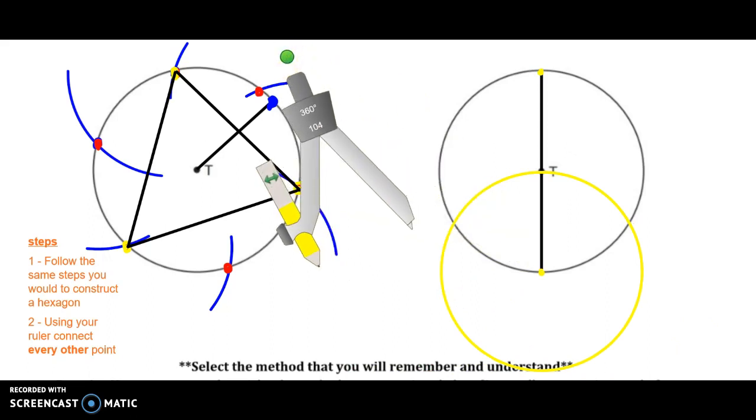Where that arc intersects the circle in those two points, that's two points of your equilateral triangle. The third point is the end of the diameter that was not the center of your circle. So now I can connect these, and there's my other equilateral triangle.